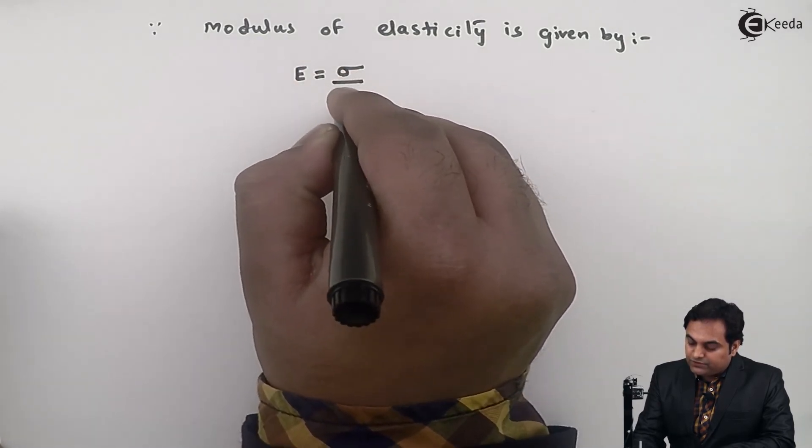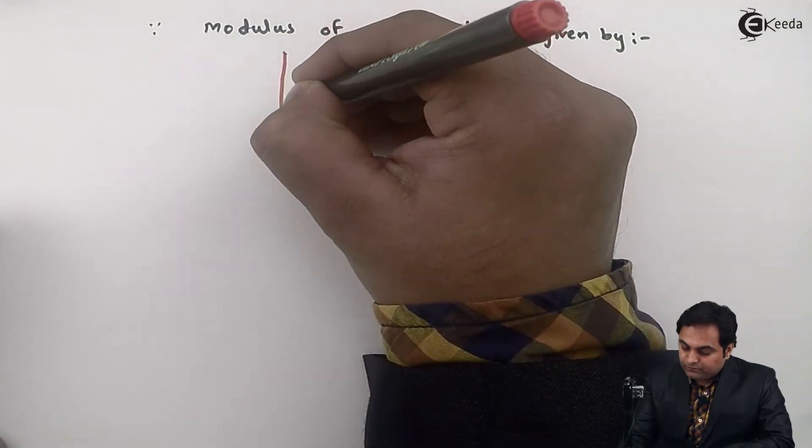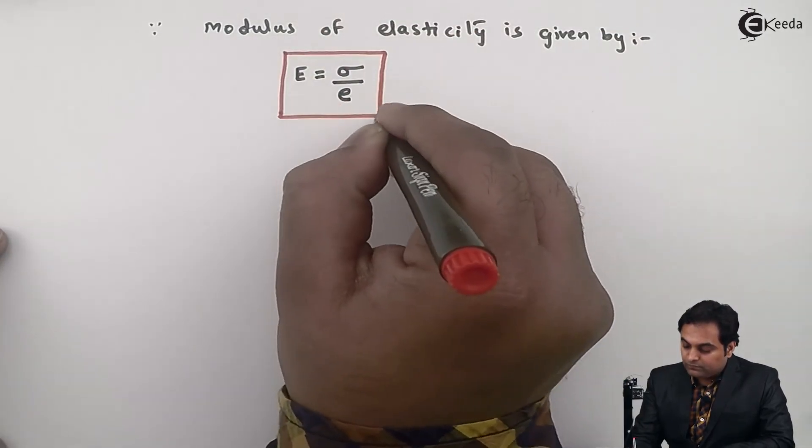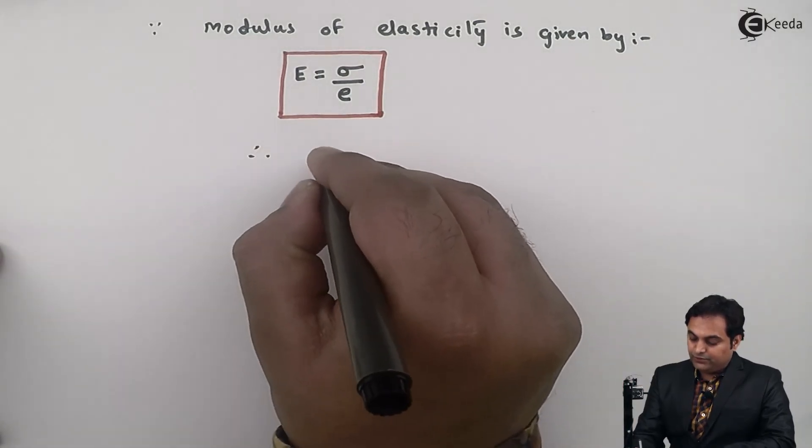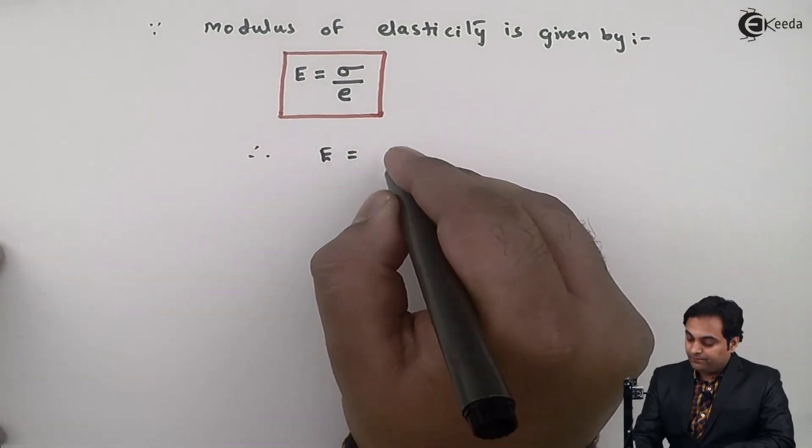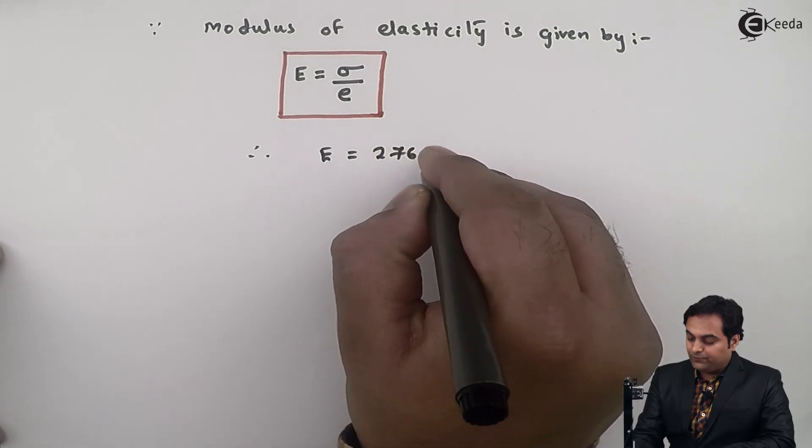So here I'll put the values. Therefore, E = σ/ε.